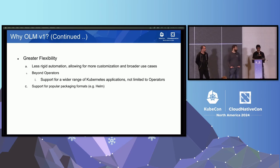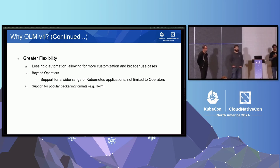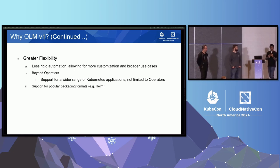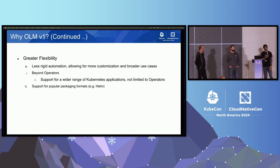With OLM v1, we also want to be more flexible. We do not want to restrict ourselves to only the operator format, but to various other formats — whatever Kubernetes would support. For example, if the operator developer wants to just give us a ConfigMap, we would accept it. We want less enforcement so there's more flexibility for authors and users. Along the same lines, we want to support packaging formats like Helm. Helm is pretty popular, everybody uses it, so we will support it.